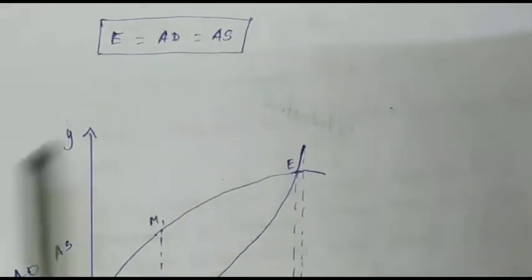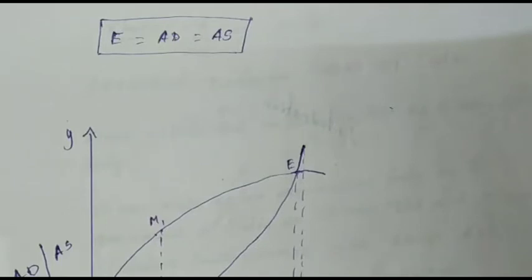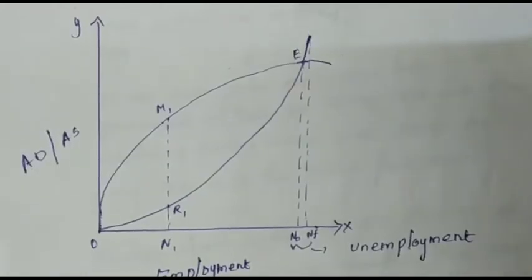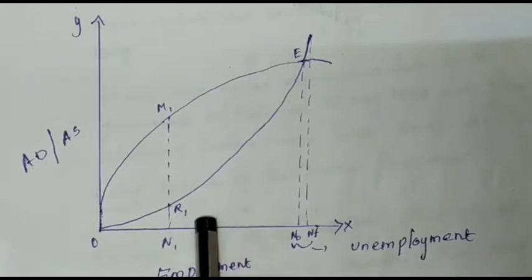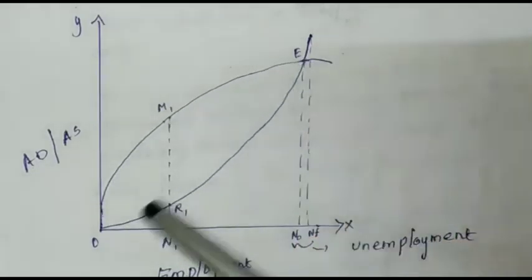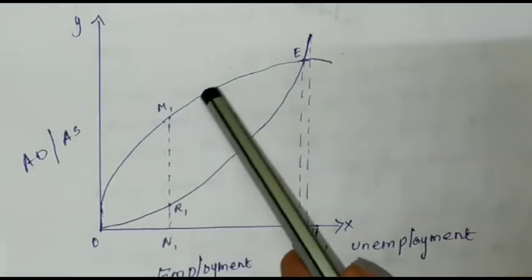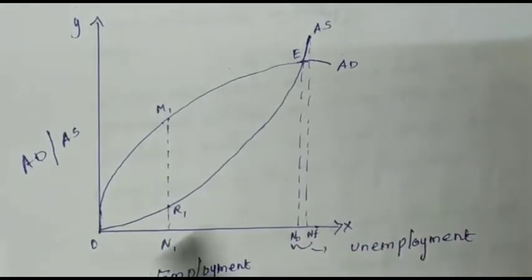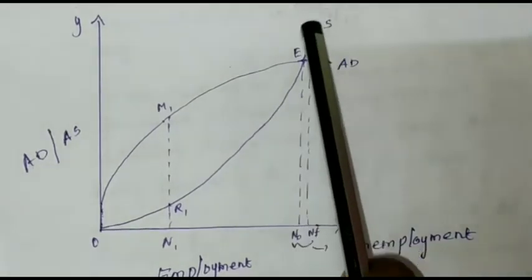Equilibrium means the equal point — the point of intersection. When demand equals supply at a particular place, that point is called the equilibrium. We have already discussed equilibrium price and equilibrium between demand and supply in previous economics topics.